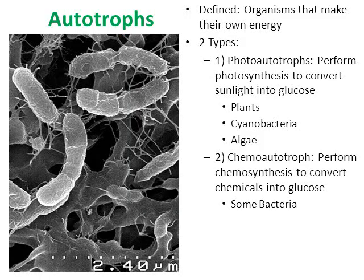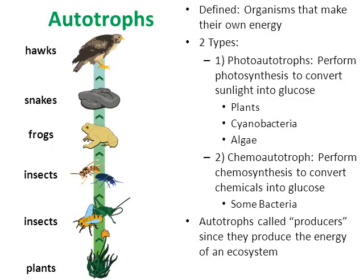Then there's the second kind of autotrophs — the chemoautotrophs. These are typically some bacteria, and they do a process called chemosynthesis. They still produce their own food and energy, they just don't use sunlight — they use chemicals. Chemicals such as methane are involved in a fairly complex chemical reaction, and the product is energy for them to use. Autotrophs, whether photoautotrophs or chemoautotrophs, are often called producers since they produce the energy of an ecosystem.